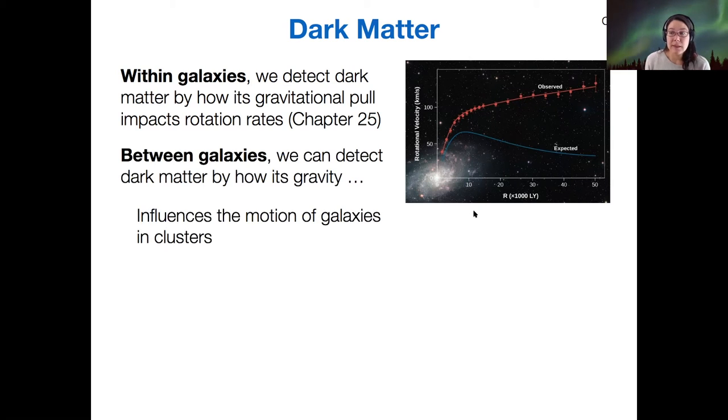Between galaxies, there's many different methods. Similar to the idea of measuring the motion of stars, we can also measure the motion of galaxies within clusters around their common center of mass. If there's more dark matter, then those galaxies within the cluster will move faster than they would if there was less dark matter. We can calculate the amount of dark matter within clusters in that way.